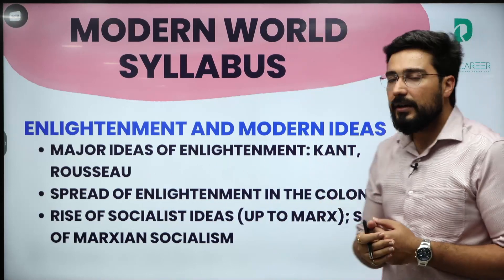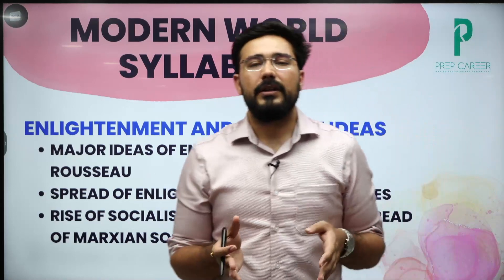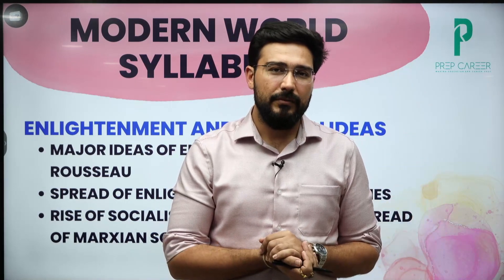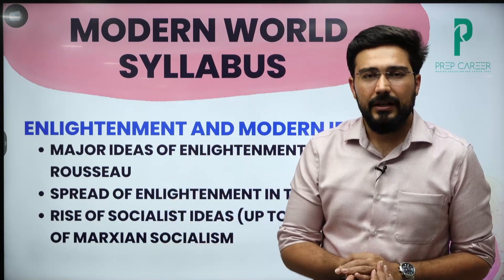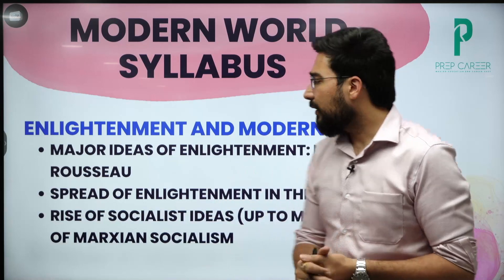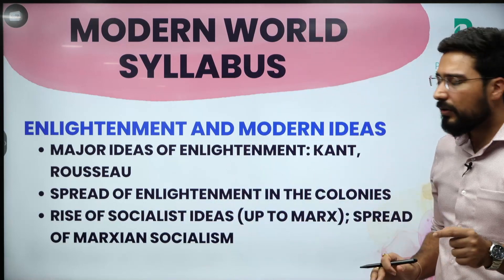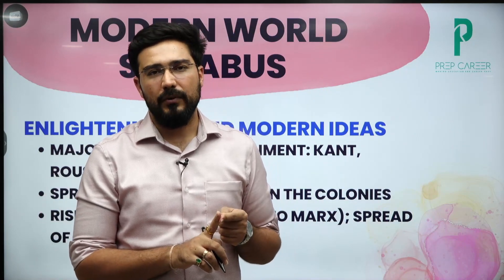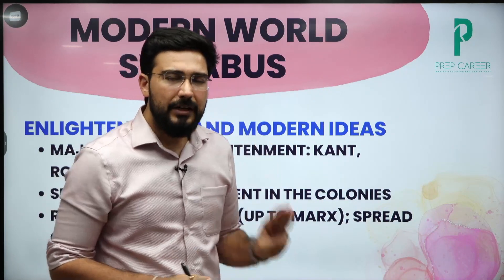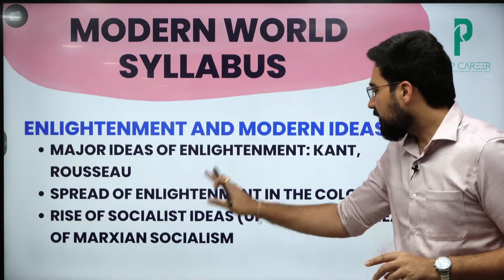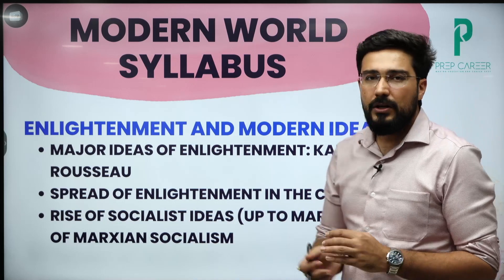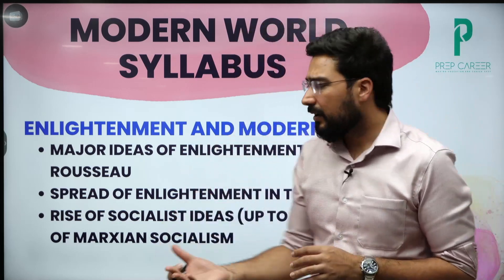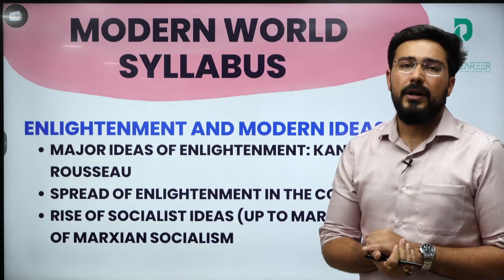Finally the syllabus talks about the rise of socialist ideas — naturally first comes industrialization, then comes the rise of socialist ideology. From the syllabus point of view, first you have to learn about utopian socialism and second you have to learn about Marxist socialism or communism. The third part mentioned in the syllabus is the spread of Marxian socialism — so three parts: utopian, Marxian or scientific socialism, and the spread of Marxist socialism.